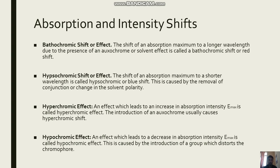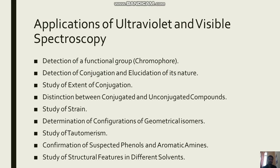Then we have the hyperchromic effect. An effect which leads to an increase in absorption intensity of Emax is called hyperchromic effect. The introduction of an auxochrome usually causes a hyperchromic shift. Hypochromic effect is the opposite — an effect which leads to a decrease in absorption intensity Emax, caused by the introduction of a group which distorts the chromophore.